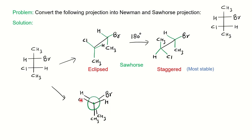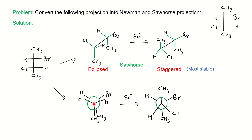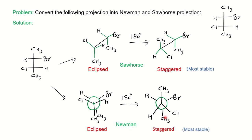This eclipsed conformation in Newman is where groups hide each other. We then do a 180° rotation of the front carbon: methyl goes to the opposite direction, H goes to the opposite direction, and Cl goes to the opposite direction — giving the opposite Y compared to the previous one. This is again the staggered form and the most stable form. In the eclipsed form groups hide each other; in the staggered form they are away — no hindrance or interaction — making it the most stable.